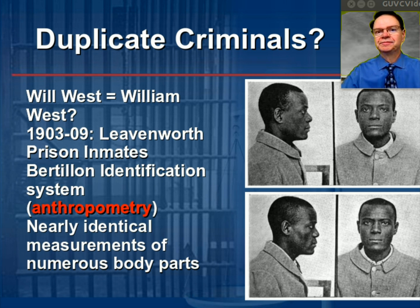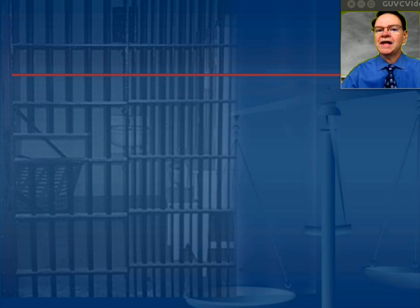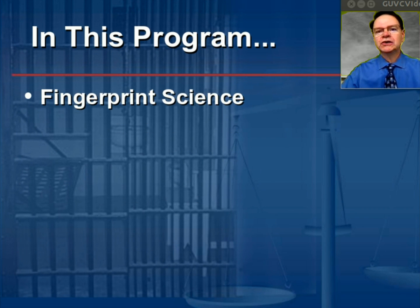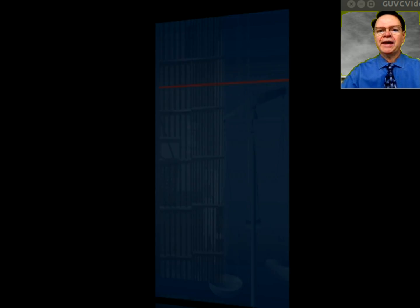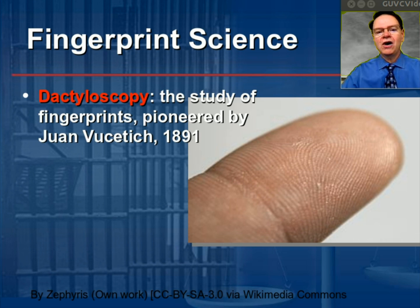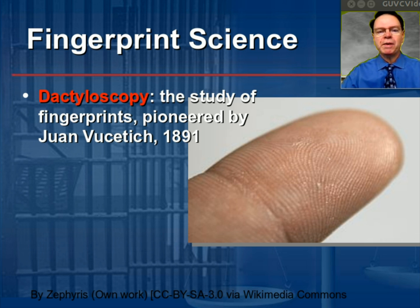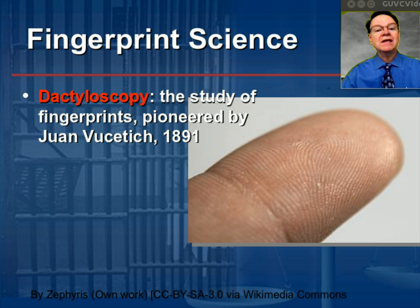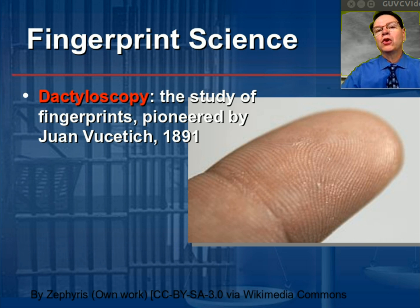How was that problem going to be solved? We'll come back to that. In today's program we're going to look at fingerprint science and how fingerprints are created. The scientific study of fingerprints is called dactyloscopy. Dactyloscopy was first pioneered by an Argentinian official known as Juan Vucetich in 1891, so it predates the Will West and William West controversy at Leavenworth Prison.